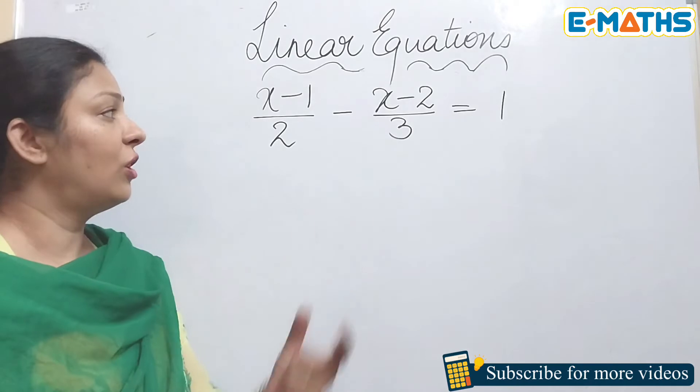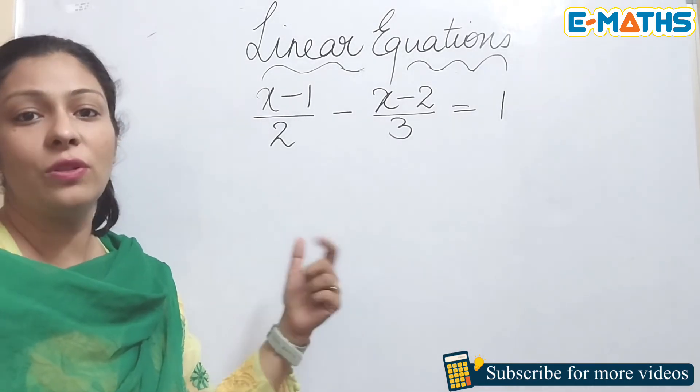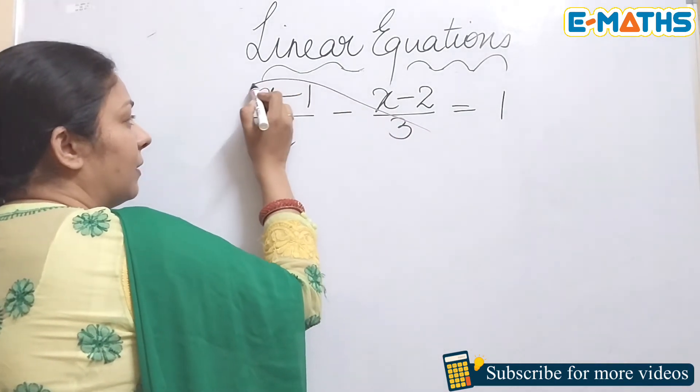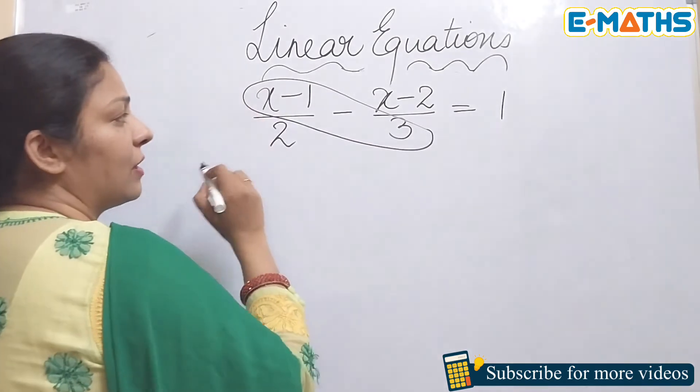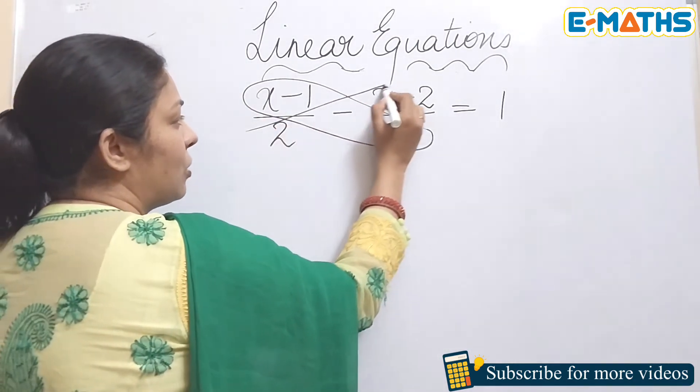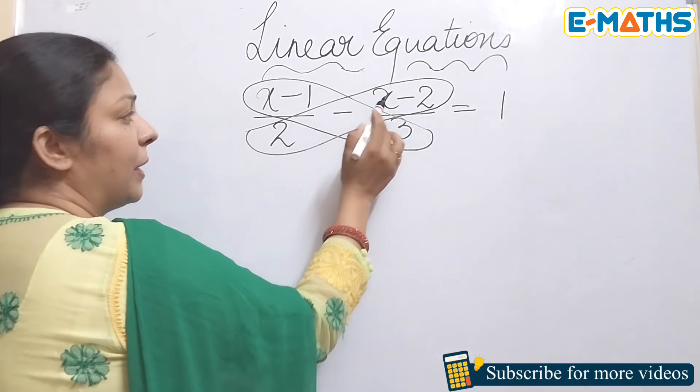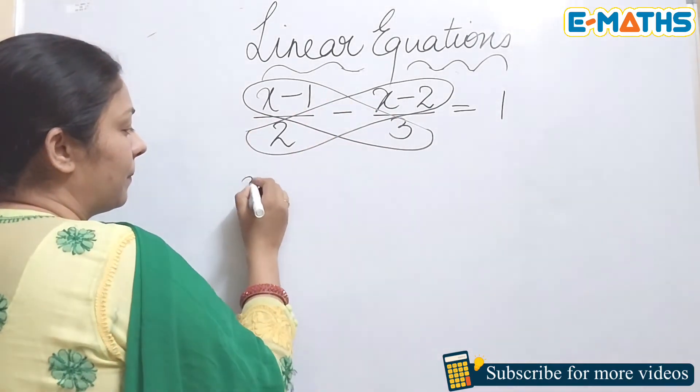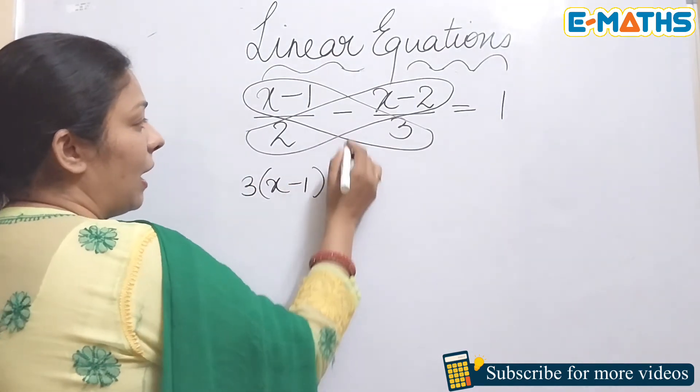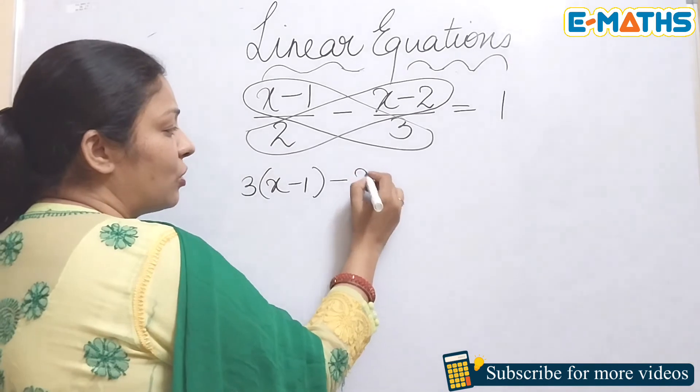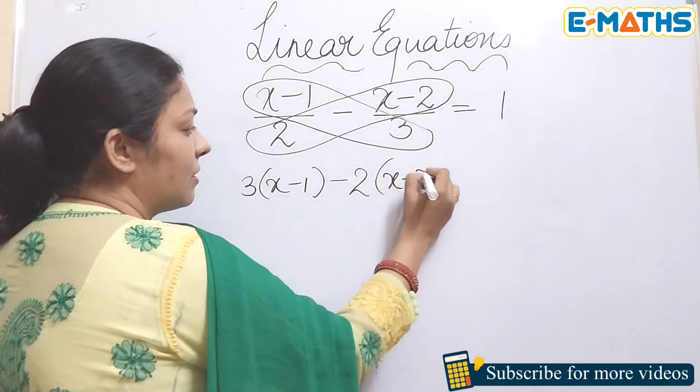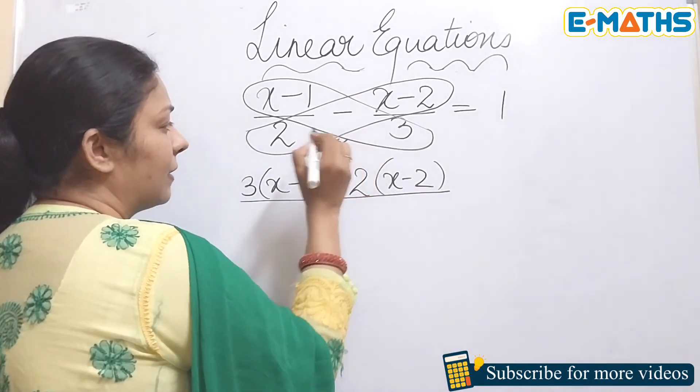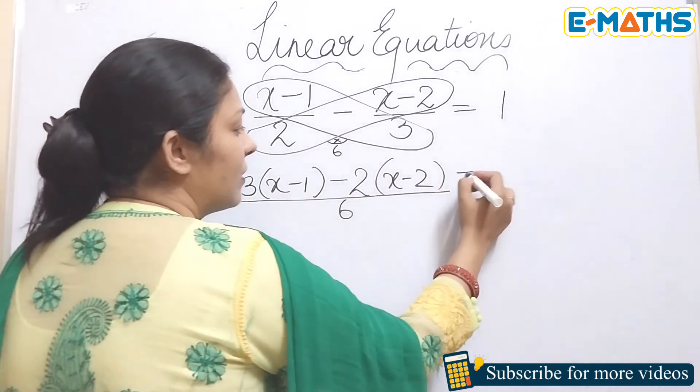As I told you, for such questions you need to use the butterfly method. Again, when you do the butterfly method, make sure that you're taking x minus 1 in this group. When you multiply this 2 by the other term, make sure you're covering x minus 2. This means we are going to multiply this 3 by x minus 1. Let this minus sign be here. You're going to multiply this 2 by x minus 2, and as I told you, the denominators get multiplied, so you get 6 here, which equals to 1.